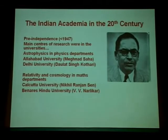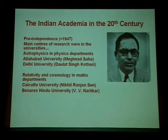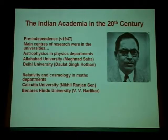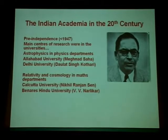Having described Chandra briefly, I now come to the other part — the Indian academia in the 20th century with whom Chandra had interactions. One can make a historical division as pre-independence and post-independence, that is 1947. Pre-independence, India had main centers of research in universities. Astrophysics was taught in physics departments of Allahabad University, where Meghnad Saha — the person behind Saha's ionization equation — worked. In Delhi University there was Daulat Singh Kothari, who followed Chandra in Cambridge in the 30s.